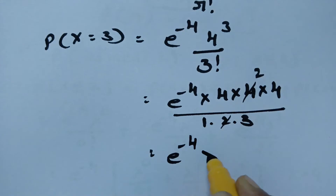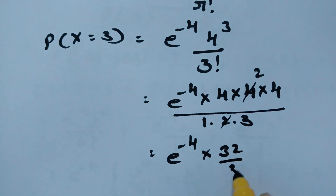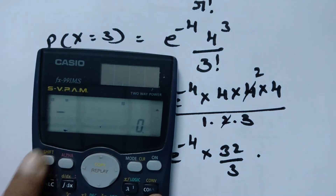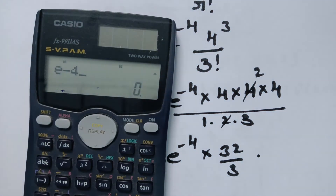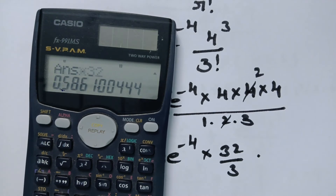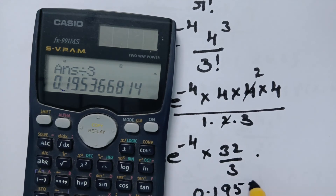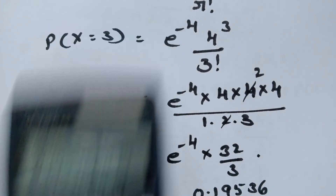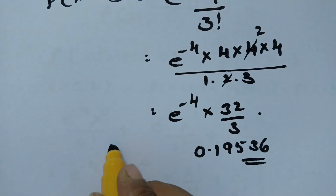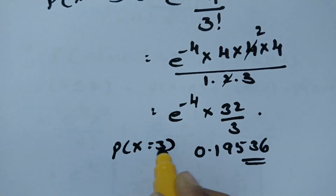Simplifying: e^(-4) × 64 / 6 = e^(-4) × 32/3. The value is e^(-4) × 32/3 = 0.19536. So the probability of exactly 3 emergency calls in a 10-minute interval is 0.19536.